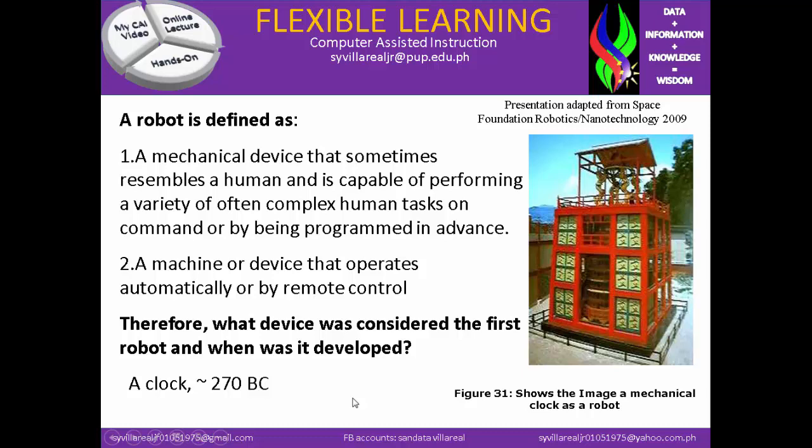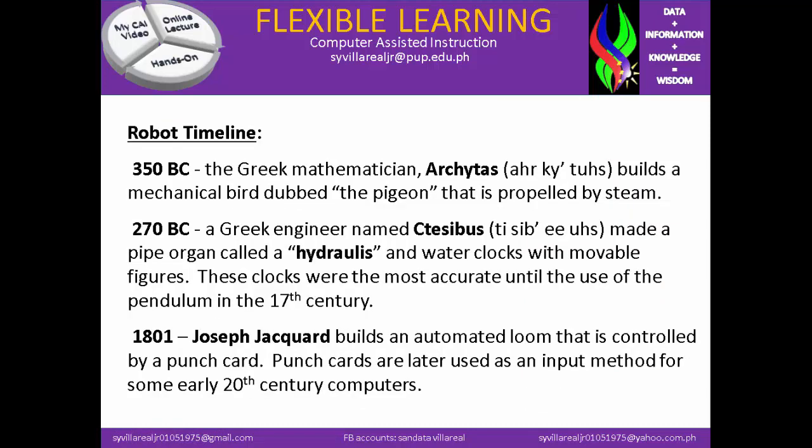What device was considered the first robot? Robot Timeline: In 350 BC, the Greek mathematician Architas builds a mechanical bird dubbed the pigeon, that is propelled by steam. In 270 BC, a Greek engineer named Thecibus made a pipe organ called Hydra Ulys and a water clock with movable figures. These clocks were the most accurate until the use of the pendulum in the 7th century.